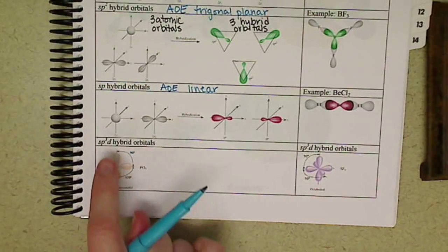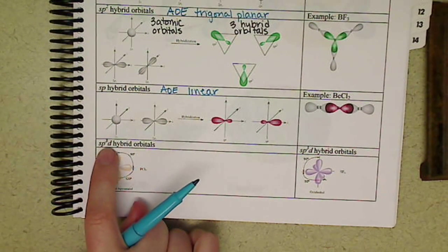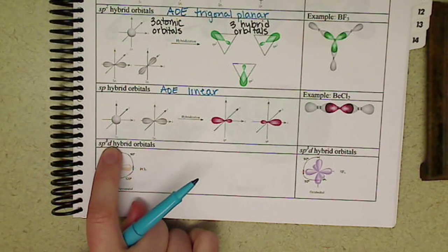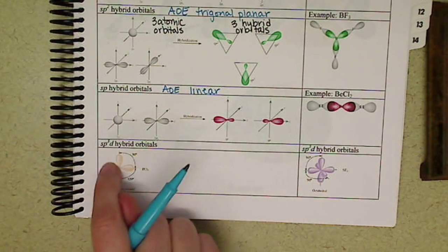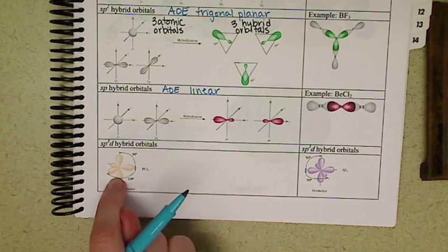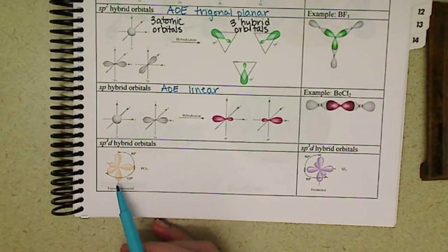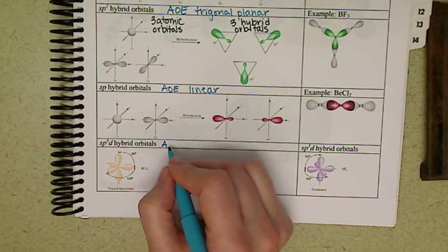We're now hybridizing with D orbitals, so in this example here, this SP3D, we have an S plus three P's plus a D, so we have five total orbitals. The five main lobes are shown here, all on one image, and so we have five areas of electrons, and this corresponds to trigonal bipyramidal.